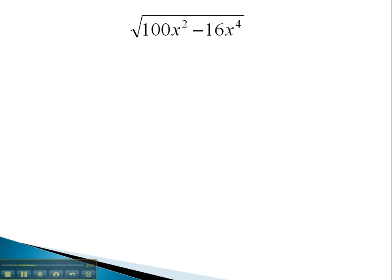You may notice that we have a greatest common factor of 4x squared. Factoring out that greatest common factor leaves behind 25 minus 4x squared.